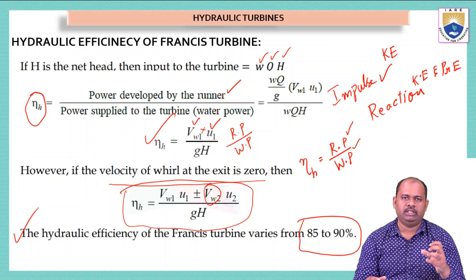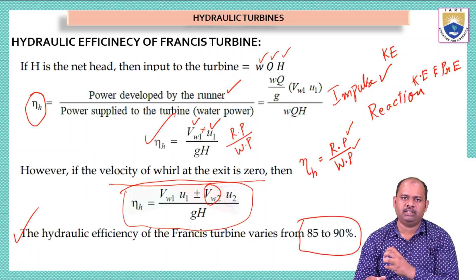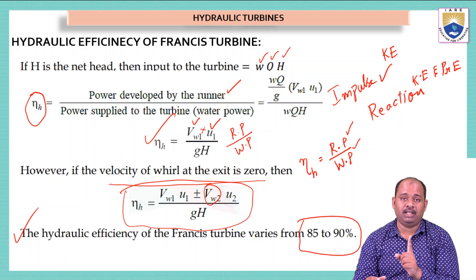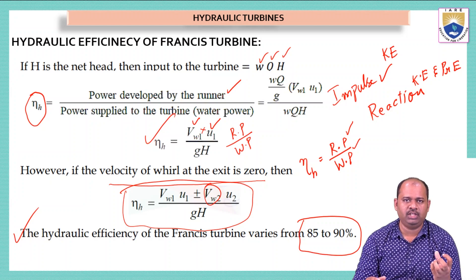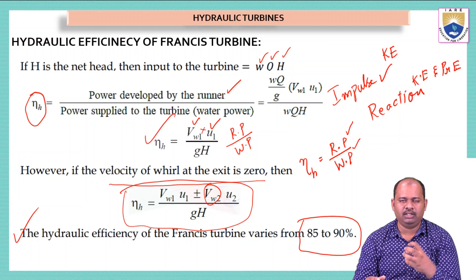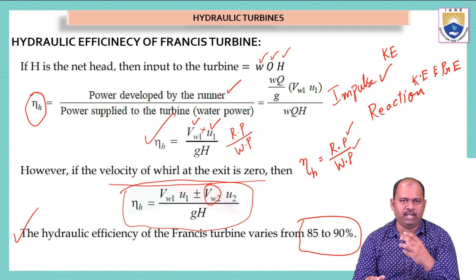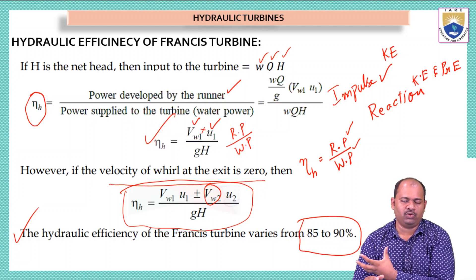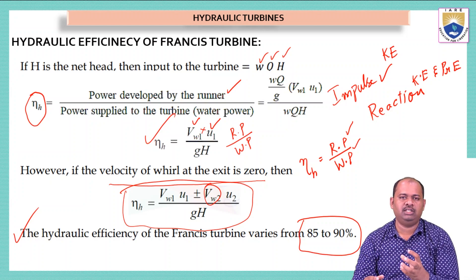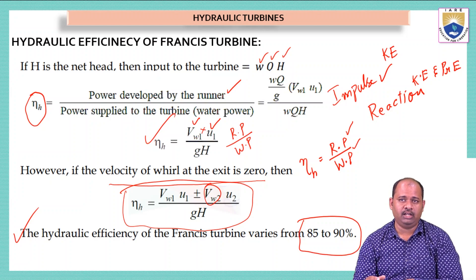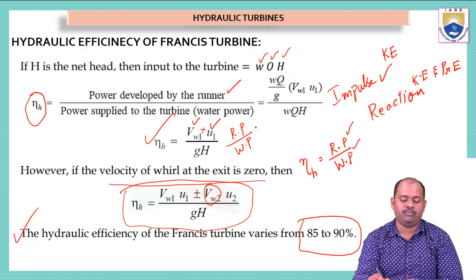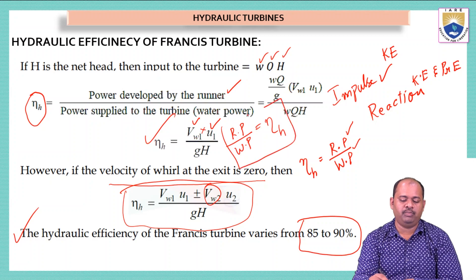Whatever water comes out of the penstock directly touches the hydraulic turbine, but even before that some power is lost due to friction between the pipe surface and the water. After that, the remaining power is converted to mechanical or rotational energy, and even in this process 10–15% of energy is lost. So hydraulic efficiency is simply remembered as runner power divided by water power.